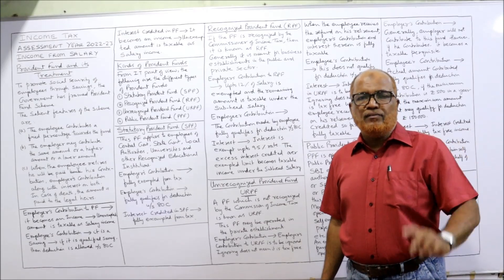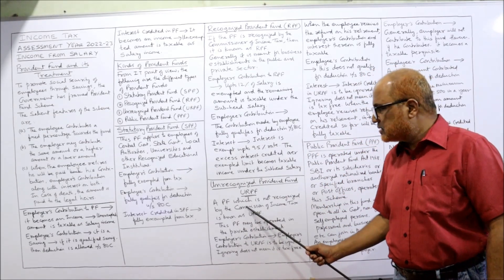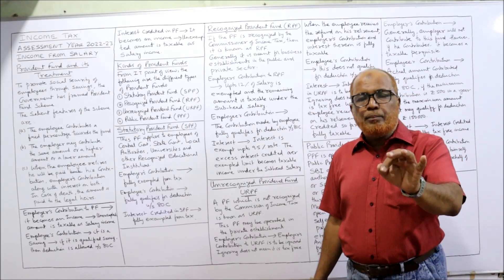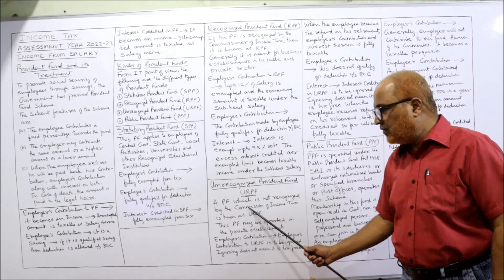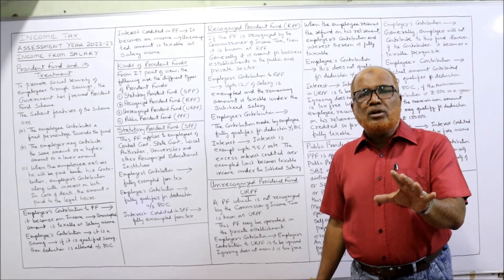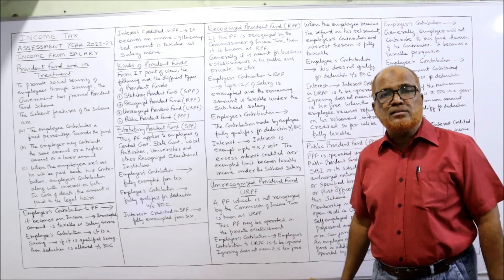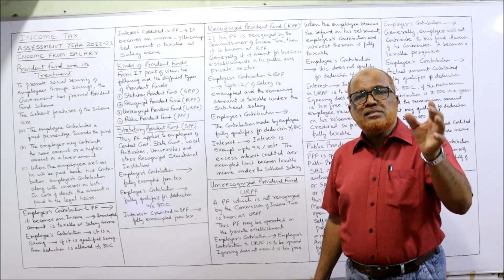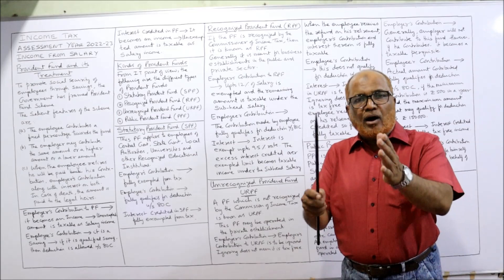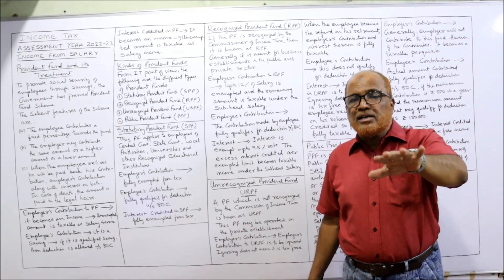Unrecognized Provident Fund (URPF) is a provident fund not recognized by the Commissioner of Income Tax. It may be operated only in the private sector — not the public sector. Employer's contribution to URPF is ignored at the time of contribution, but ignoring does not mean it is tax free. When the employee gets the amount at the time of retirement, the employer's contribution is fully taxable.